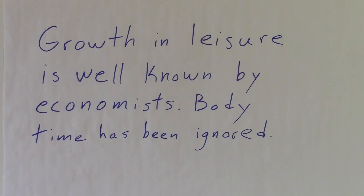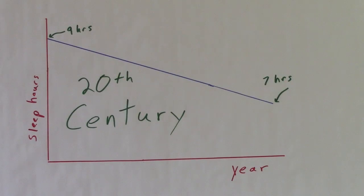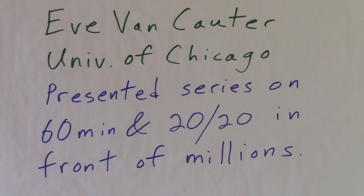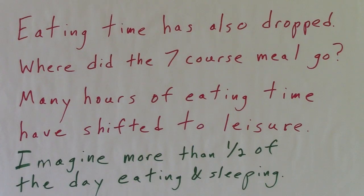The growth in leisure time over the 20th century is well known by economists. Body time has been ignored. Over the course of the 20th century, sleep gradually fell from 9 hours a night to about 7 hours a night, according to some measures. Eve Von Cotter of the University of Chicago presented this series on 60 Minutes and 20-20 in front of millions. Eating time has also dropped. Where did the seven course meal go? Many hours of eating time have shifted to leisure. Imagine more than half of the day eating and sleeping.